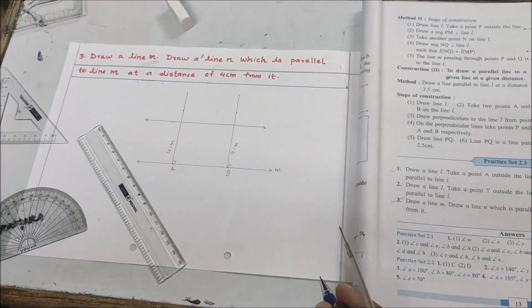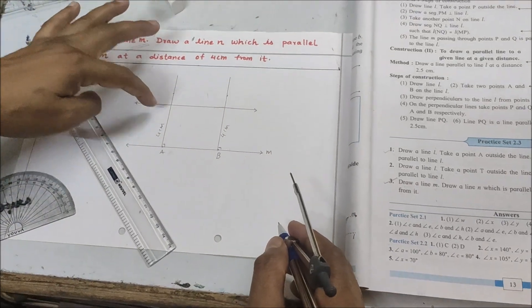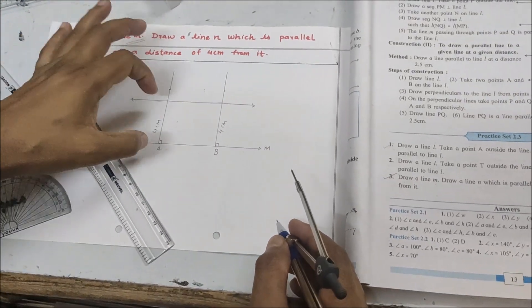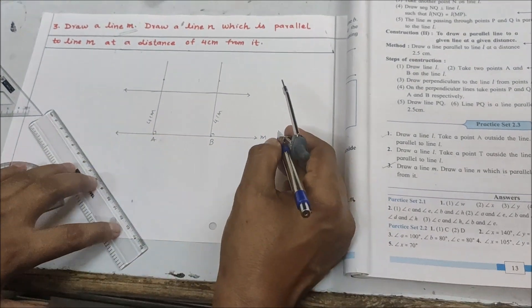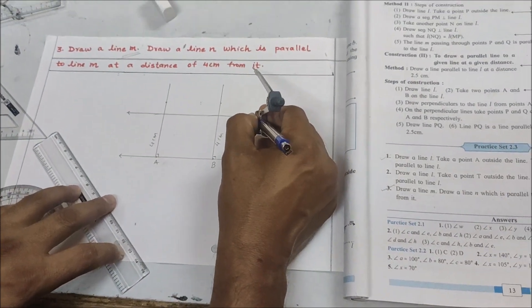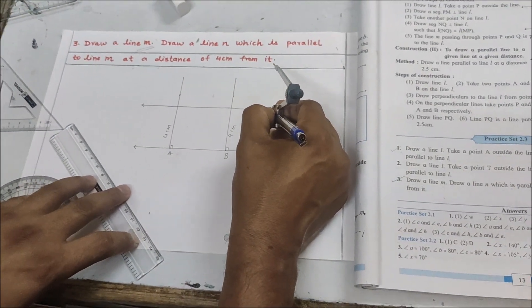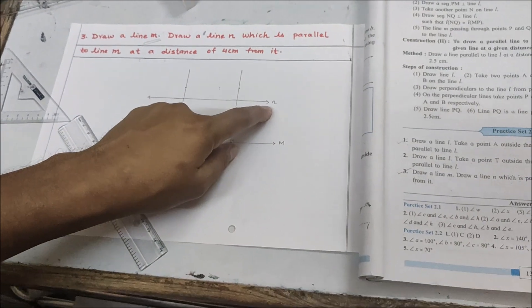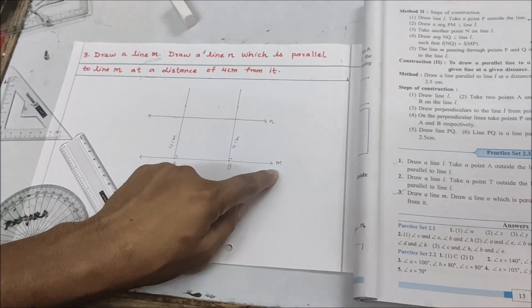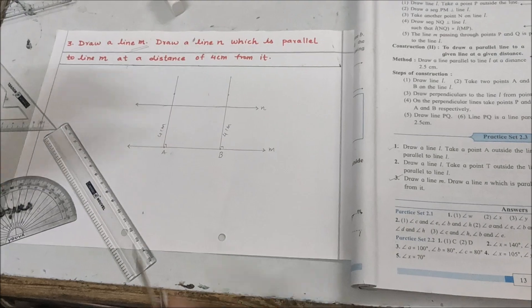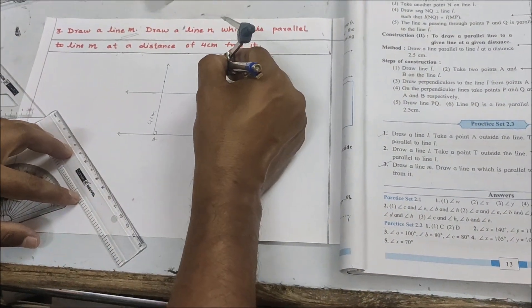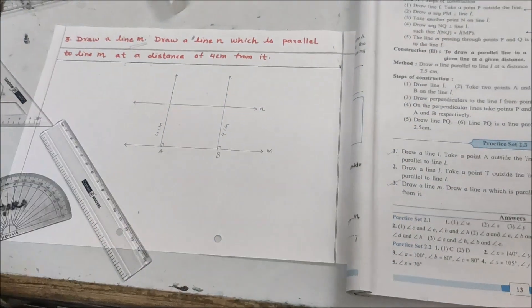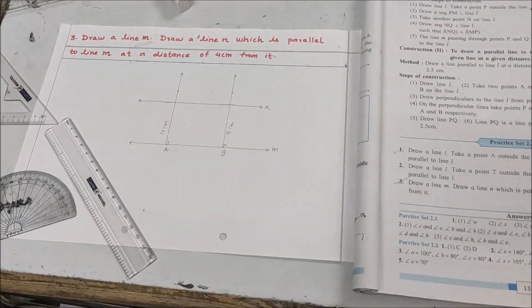You can see I have joined both arcs with the help of a ruler. We got a line, and this line is parallel to line m with a distance of four centimeters between them. We name this line n. So line n is parallel to line m and the distance between them is four centimeters. This is how we complete the construction for question number three.